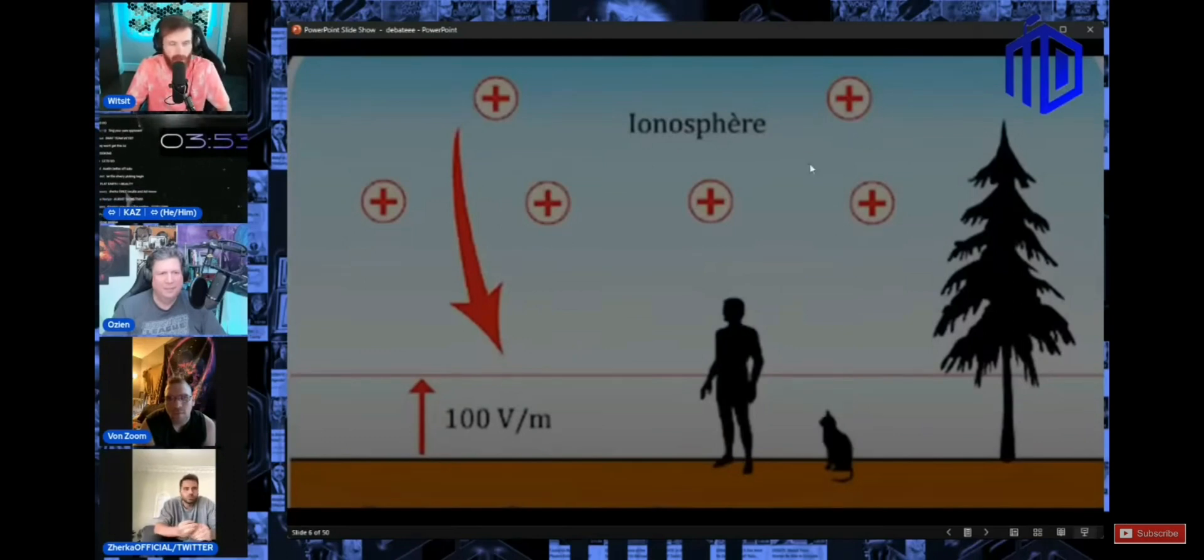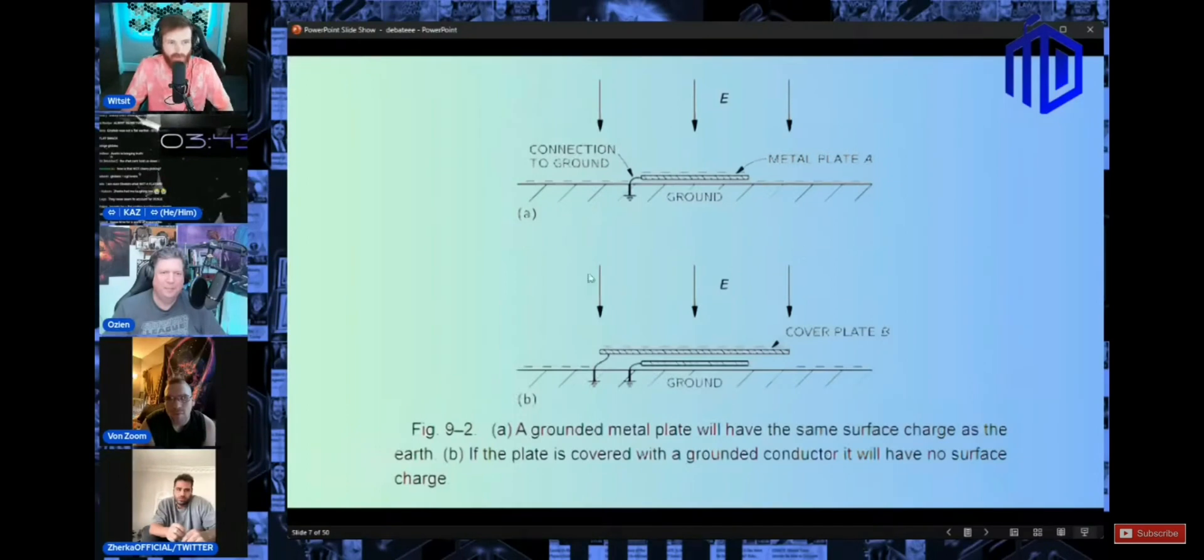As for this whole gravity nonsense, there's something called a downward electric current on the earth. It's measurable, it's provable. We have positive energy increasing above, then it goes down to the ground to seek equilibrium. This is from a Richard Feynman lecture explaining it.